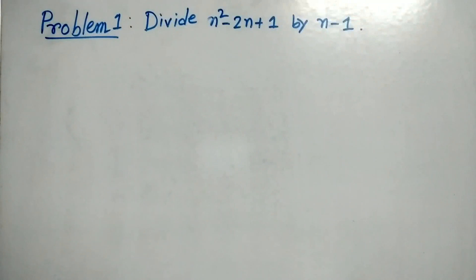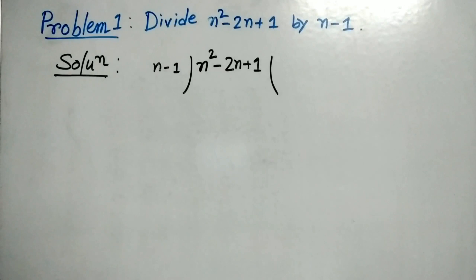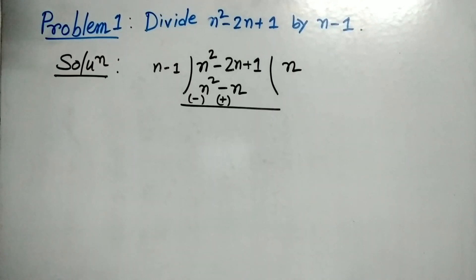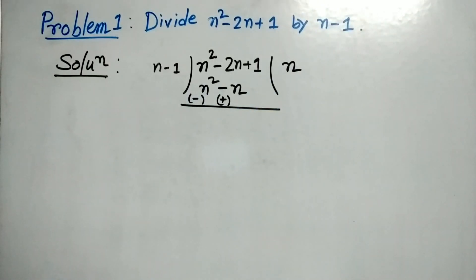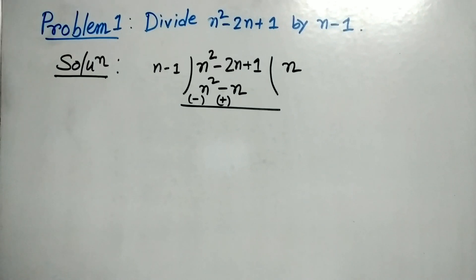The first problem is: divide n squared minus 2n plus 1 by n minus 1. We can see both the dividend and the divisor are polynomials, so we will write them in this way. Next we will find a term by which we multiply the divisor to get the first term of the dividend.